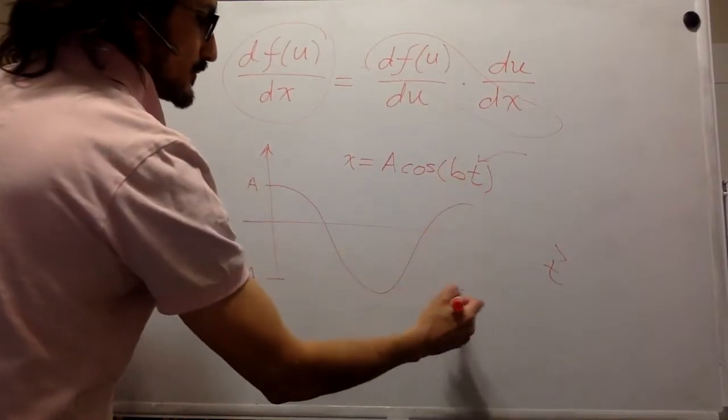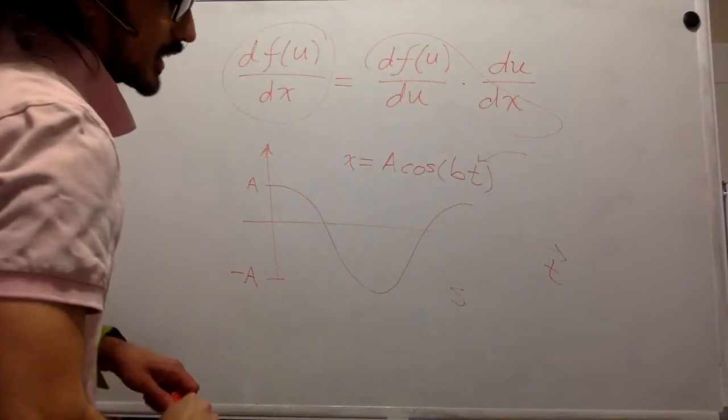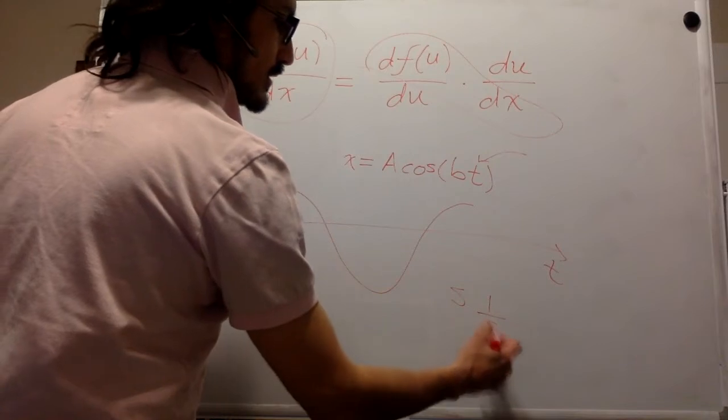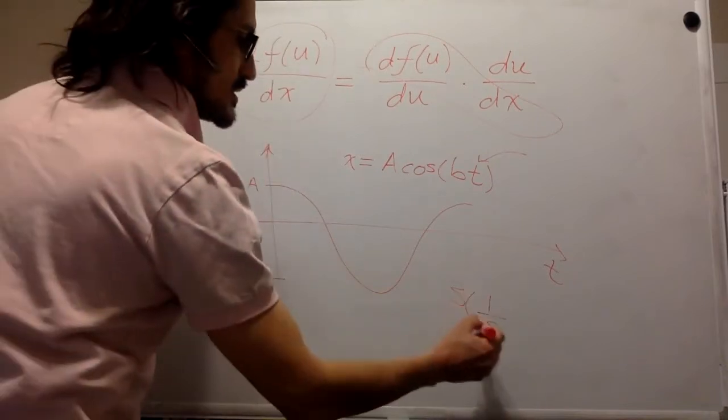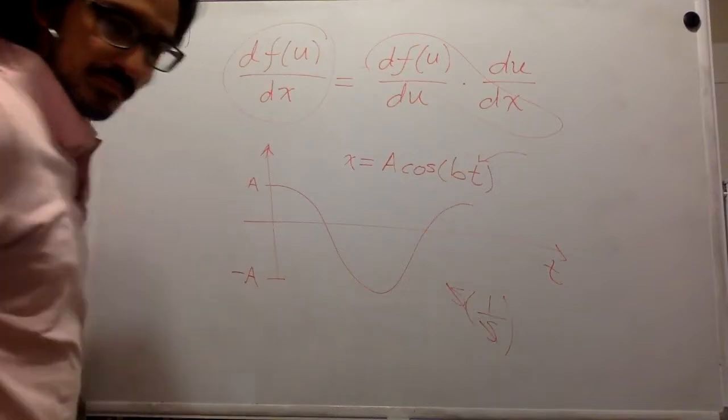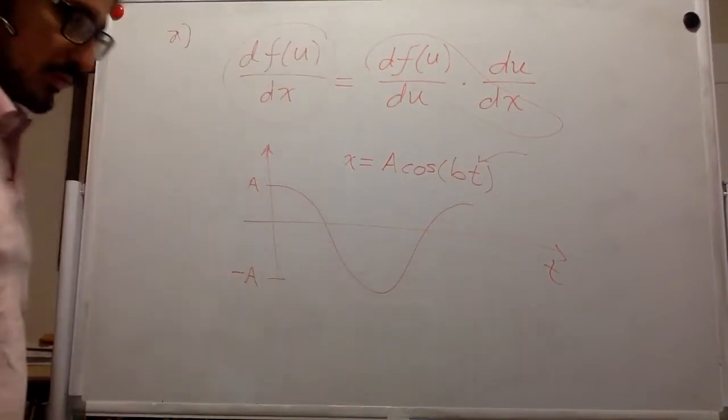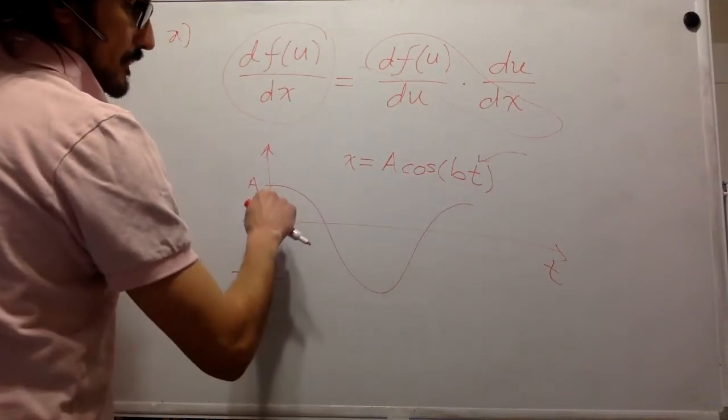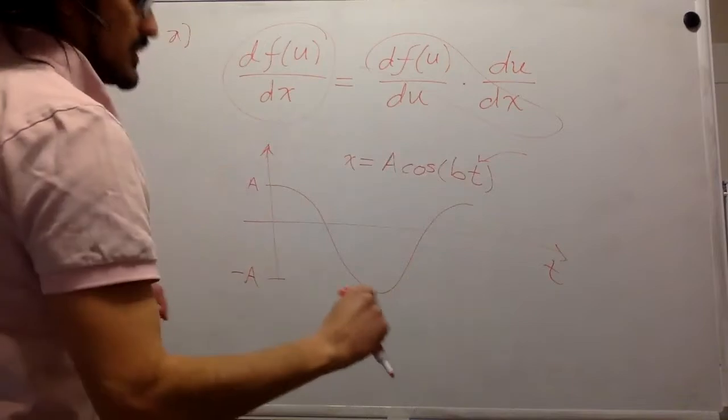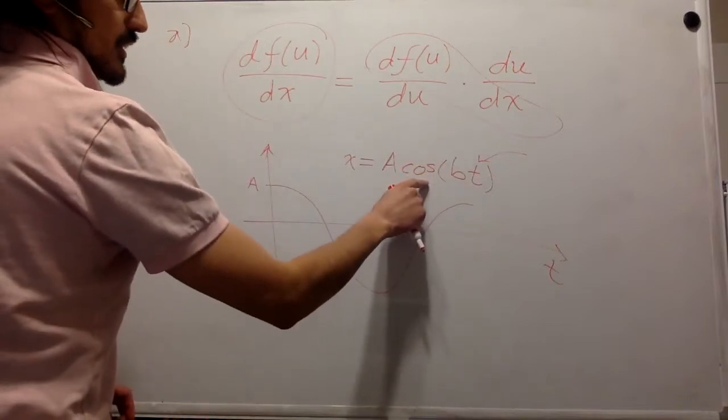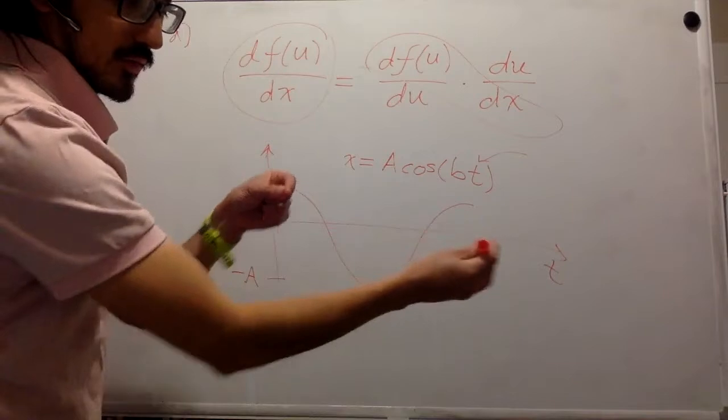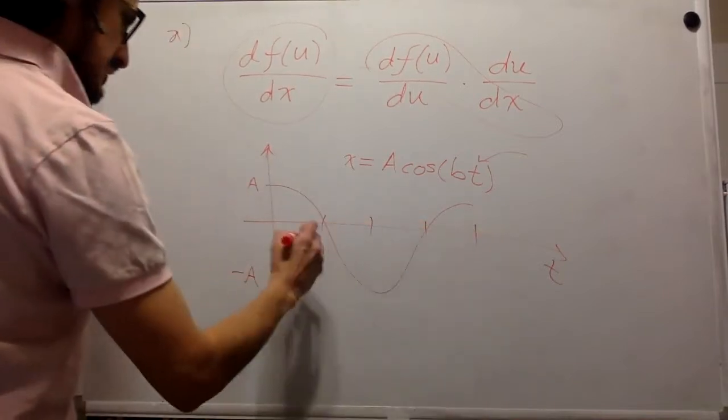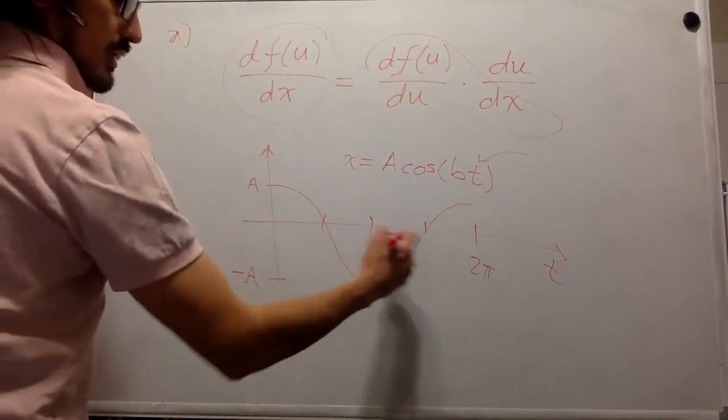The time here has units of seconds, and I mentioned that the argument has to be unitless. So that means that B ought to have units of 1 over second so that it is unitless. The angular distance that it takes the cosine to go back and forth, one oscillation, is 2 pi in radians.